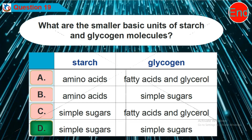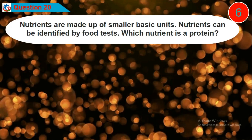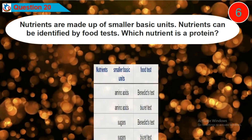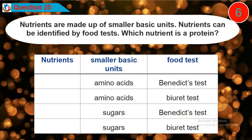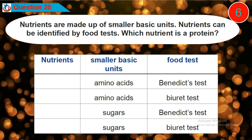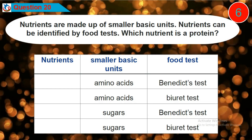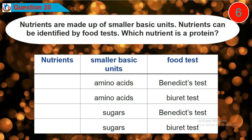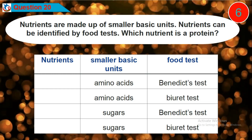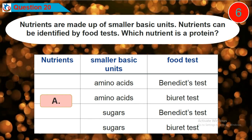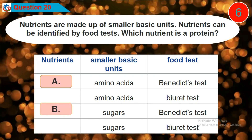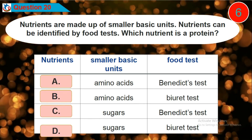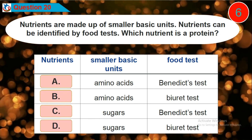Question 20: Nutrients are made up of smaller basic units and can be identified by food tests. Which nutrient is a protein? Is it option A, B, C, or D?